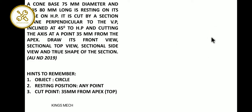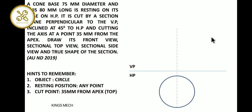We will draw starting from the axis line - VP and HP. After that, one circle at the base. Label the circle points as A, B, C, D, E, F, G, H. This is part of the axis line.